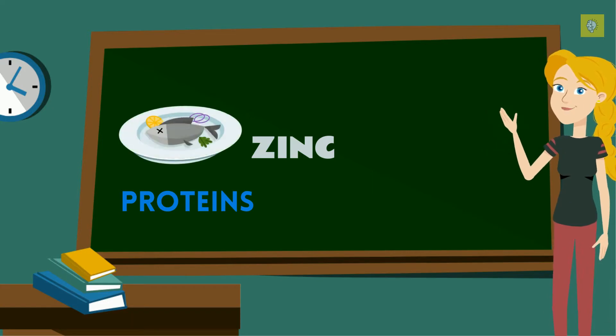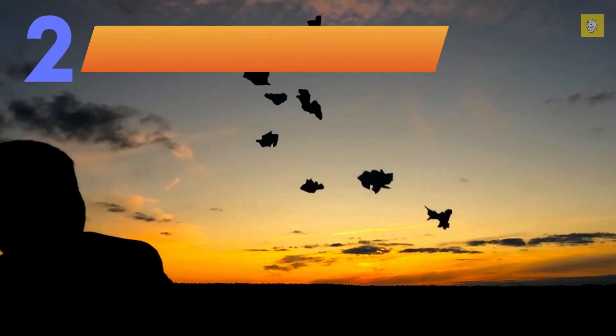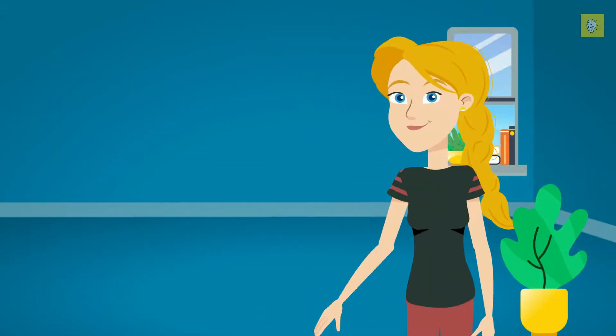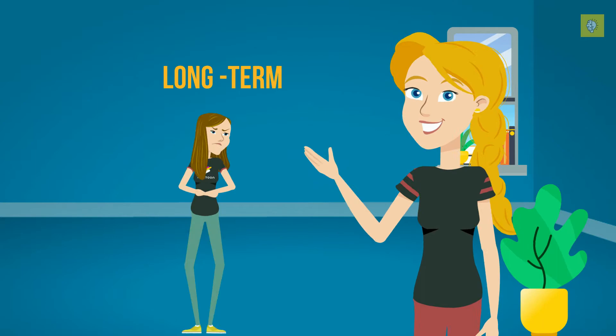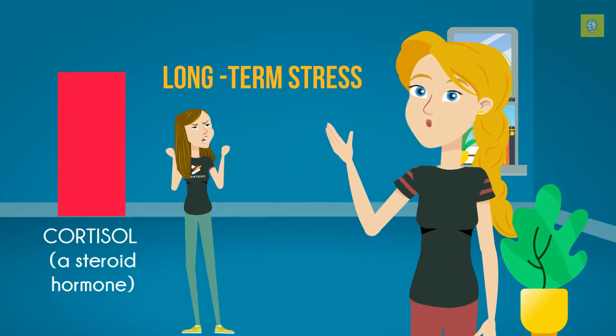Additional sources of protein and zinc include seafood, lean meat and poultry. Number two: Keep stress under control. It is a known fact that long-term stress leads to chronically elevated levels of steroid hormone called cortisol.